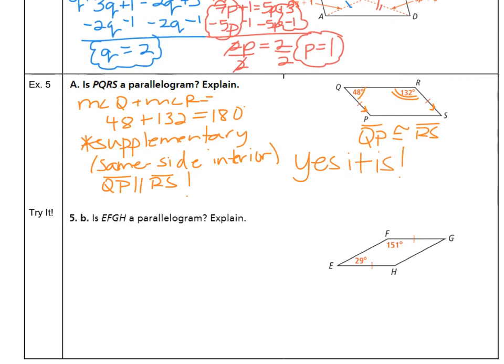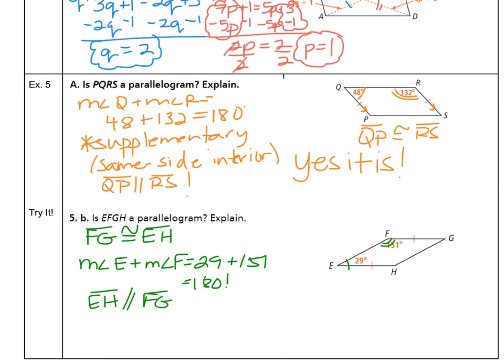All right, last but not least, can you justify this same idea? Is EFGH a parallelogram? And explain. Notice we have FG on the top and EH on the bottom. So we have that they're congruent to each other. FG is congruent to EH. On the left side, I've got 29 and 151. So the measure of angle E plus the measure of angle F equals 29 plus 151. And that is in fact 180 again, which makes EH also parallel to FG because of the same side interior angle rule. So if they're parallel, then yes, once again, it is a parallelogram.